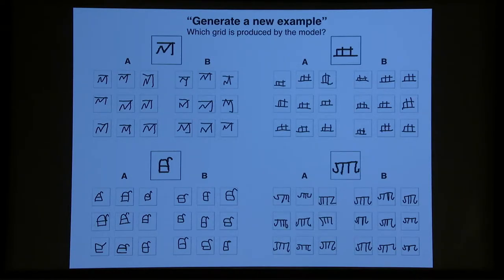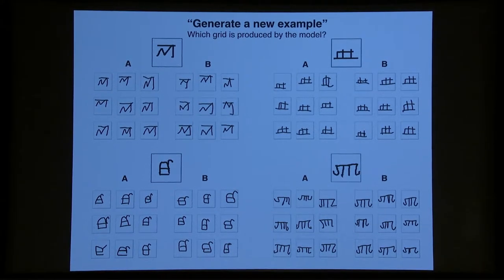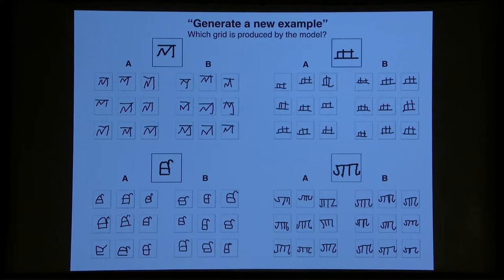And we evaluated the model on various generative tasks in addition to discriminative and classification tasks. This is one example which was to generate a new example task where nine different people were provided with an image of a new character and were asked to produce a new example of that character, while the model was asked to do the same thing. You can think of this as a visual Turing test for each of these different characters, which grid was produced by people versus the machine. I'll give you a second to see if you can guess for these four which is the machine, and then I'll show you the answer.